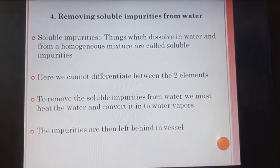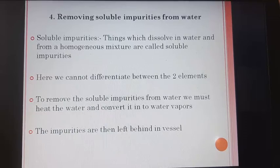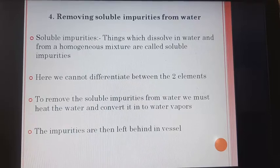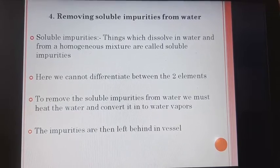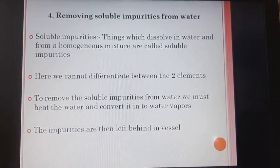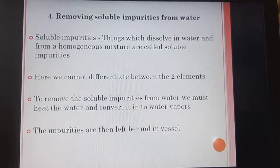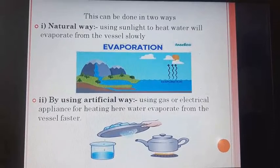Fourth, removing soluble impurities from the water. Things which dissolve in water and form a homogeneous mixture are called soluble impurities. Here, we cannot differentiate between the two elements. To remove the soluble impurities from the water, we must heat the water and convert it into water vapors. The impurities are then left behind in the vessel. This can be done in two ways.